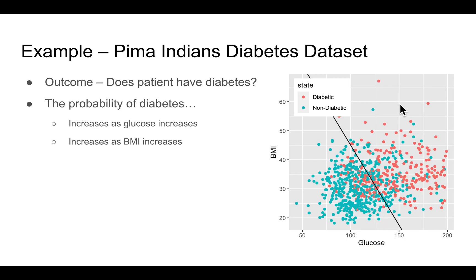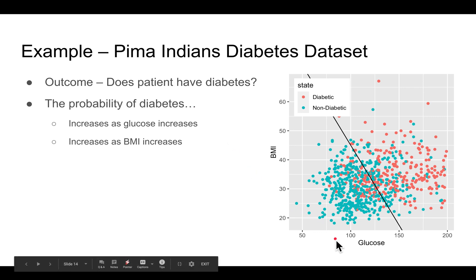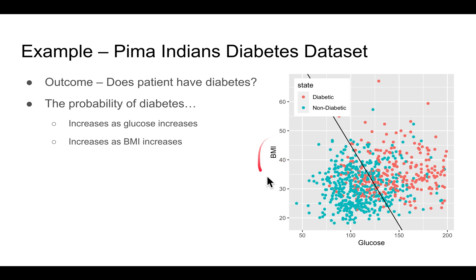Here's another example where there are two dimensions. We might want to predict whether a patient has diabetes, and here we're looking at the blood glucose level as well as the BMI, which is a measure of how overweight the patient is. The red dots represent people with diabetes and the blue dots represent people without diabetes. What you generally see is that as people are further away from the black line in one direction, they are more likely to have diabetes, and further away in the opposite direction, they are less likely to have diabetes. So this is somewhat similar to the S-curve, but in more dimensions.